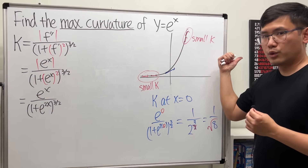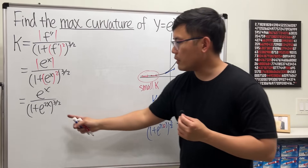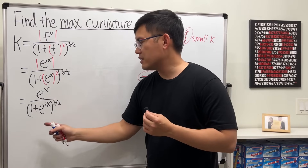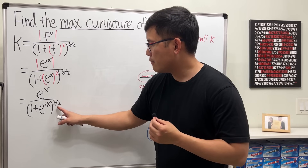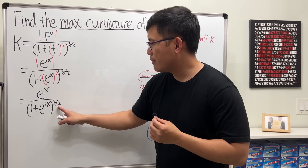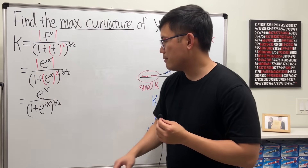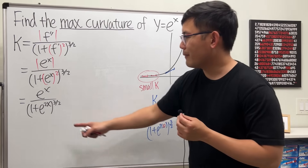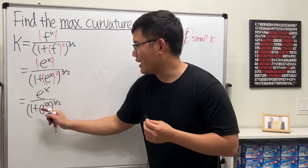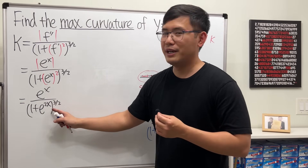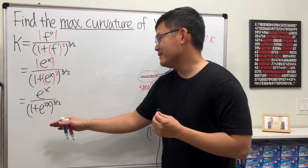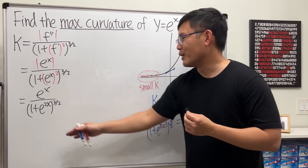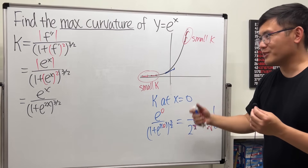Also, if x is going to positive infinity, when x approaches infinity, the denominator is much bigger — if you ignore the 1 and multiply the powers, you get e to the 3x on the bottom, so you have infinity on the bottom, meaning the curvature will also be small, approaching 0 as well.